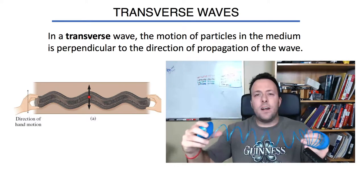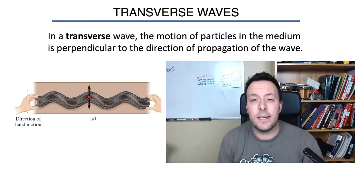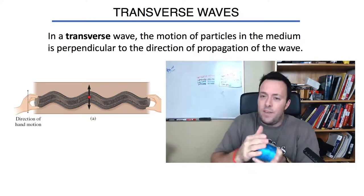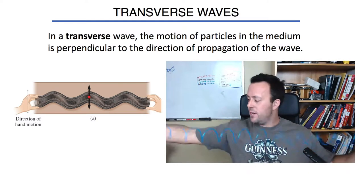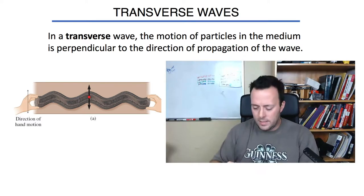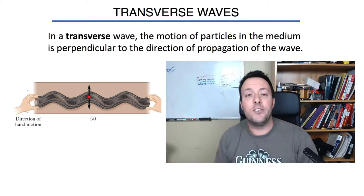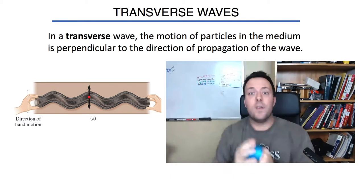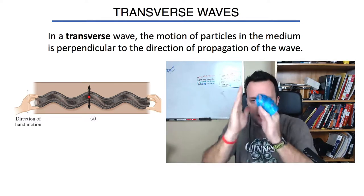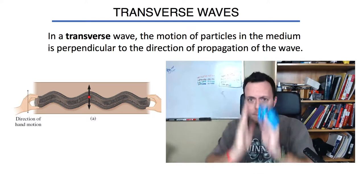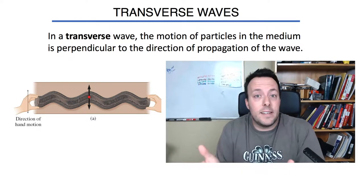With a short slinky it's very hard to generate several undulations because the wave eventually reflects off my hand, but you get the picture. If I stretched this out along the floor and somebody held the other end, I could then generate several undulations and watch the wave propagate down the slinky. So that's a transverse wave — you move your hand up and down, but the wave moves along the rope or slinky.